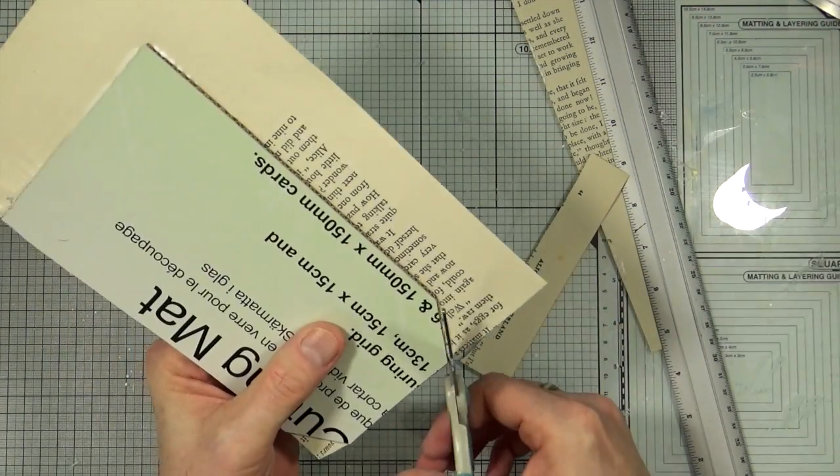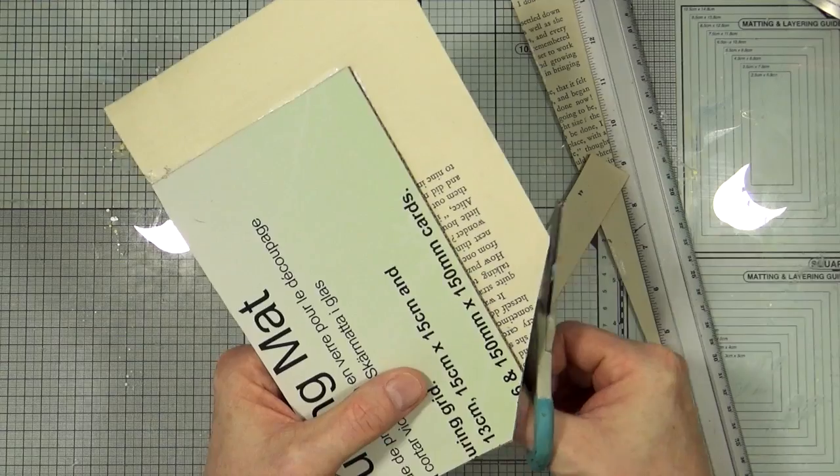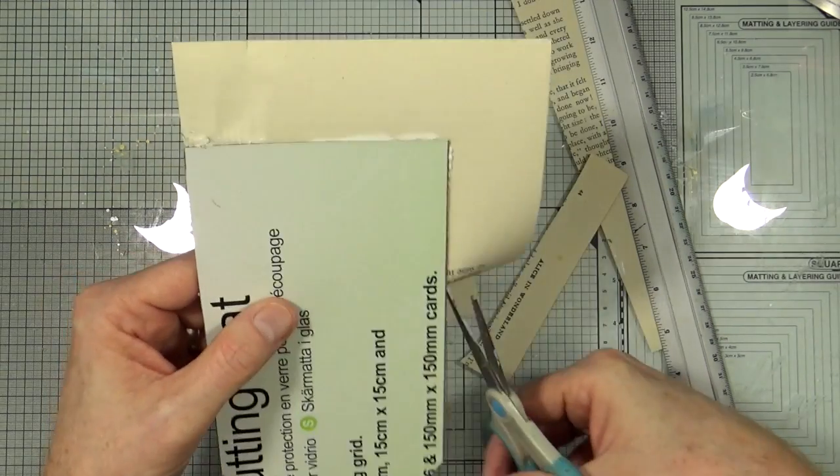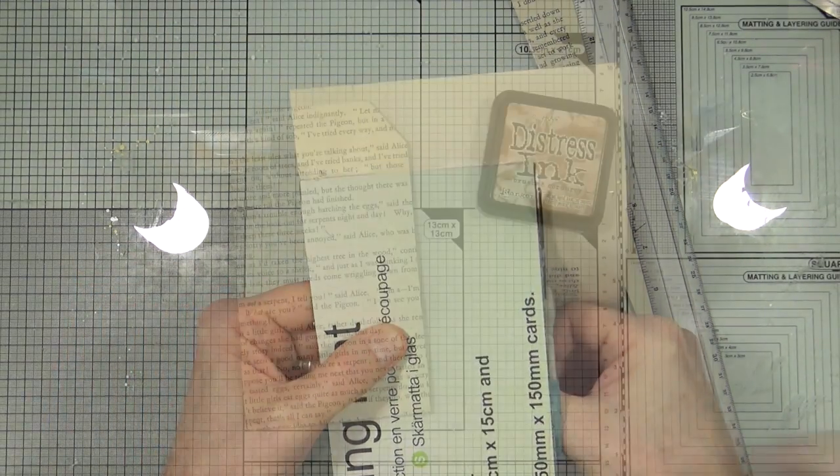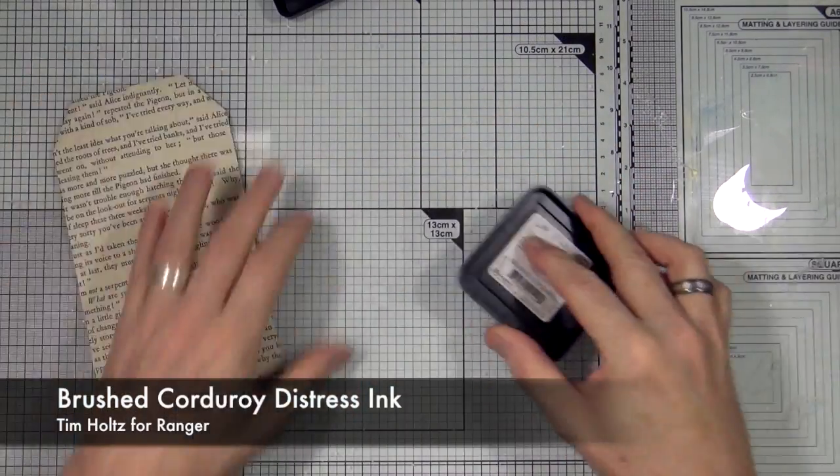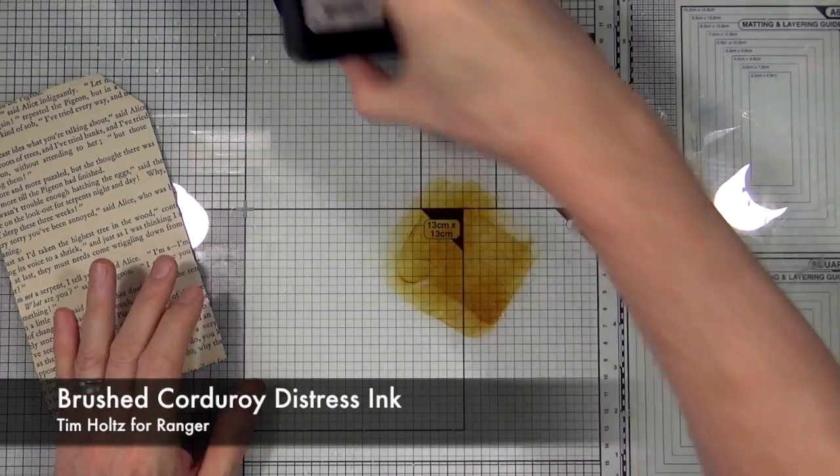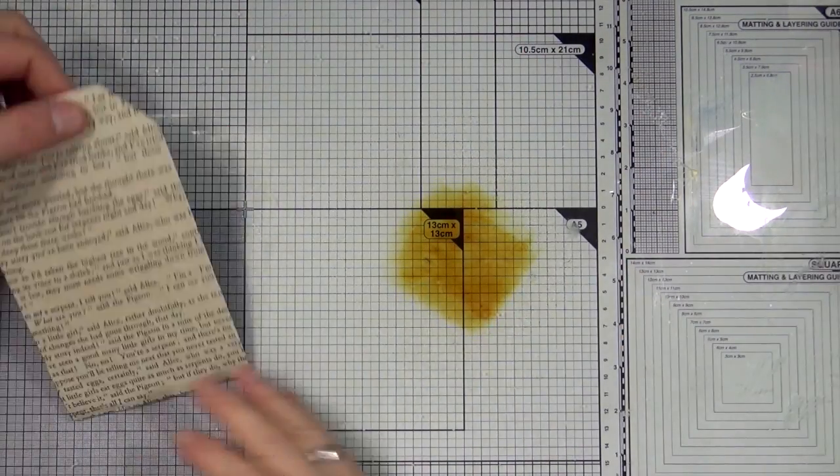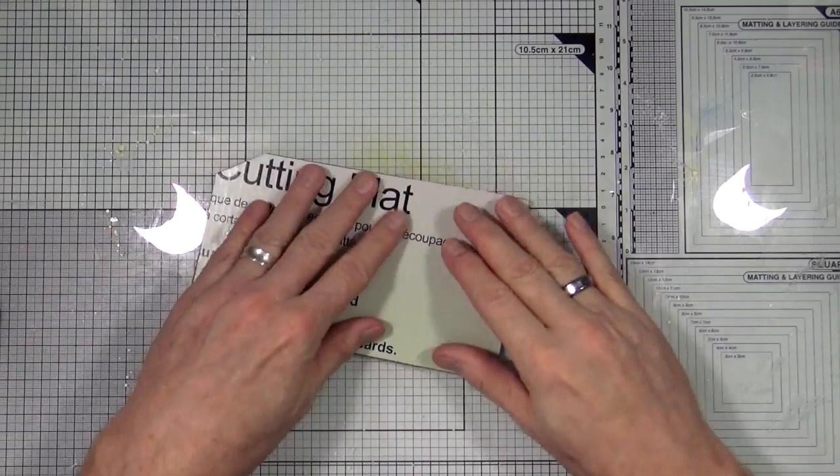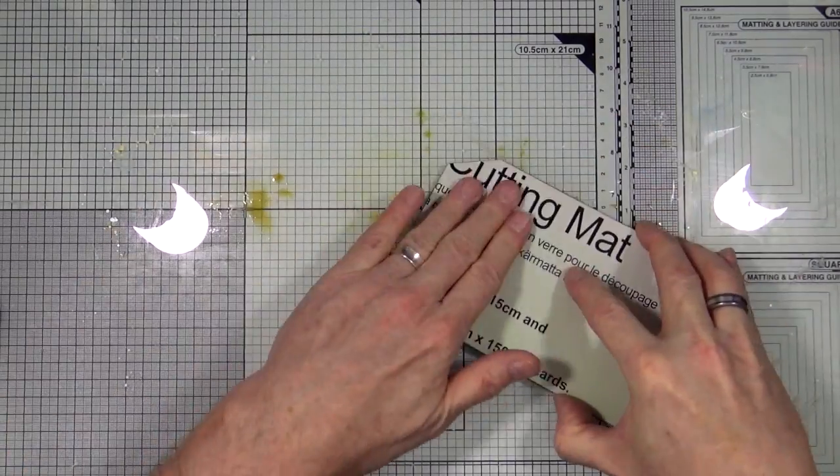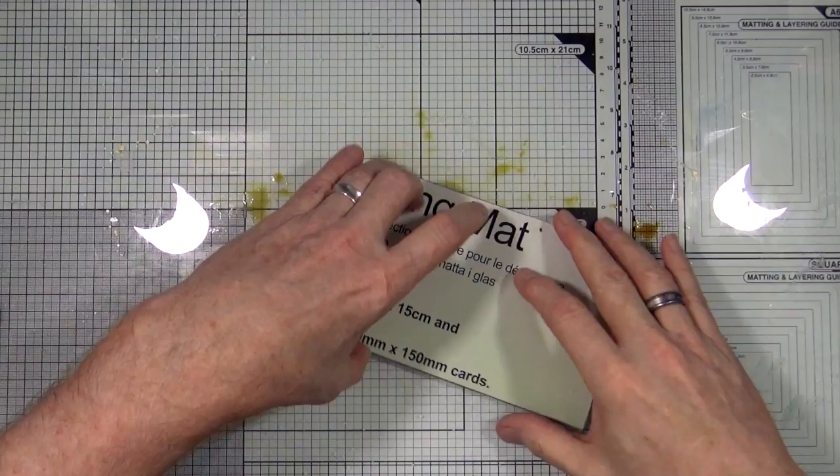Now we're all dry, I'm going to take the brushed corduroy distressing from Tim Holtz Ranger, apply some to my glass craft mat, add a little bit of water, and then I'm going to smoosh the tag all into the ink, making sure that I soak up that lovely color into the paper on the page.